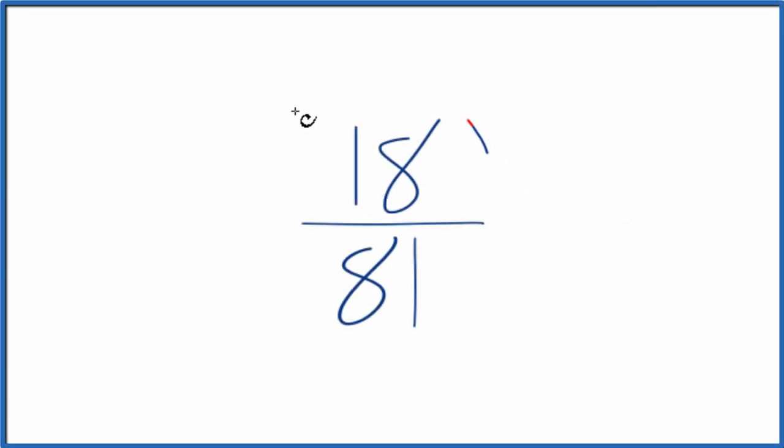Let's simplify the fraction 18 over 81. So what we want to do is find another fraction that's equivalent. It's equal to 18 divided by 81, it's just that we've reduced it or simplified it down to its lowest terms.